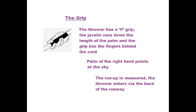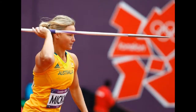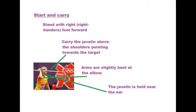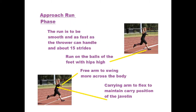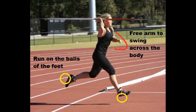With the grip, the thrower has a V-grip. The javelin runs down the length of the palm and the grip has the fingers behind the cord. For start and carry, stand with the right foot forward. The approach run should be smooth and fast — as fast as the thrower can handle — at about 15 strides. Run on the balls of your feet with high knees.